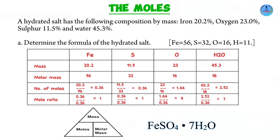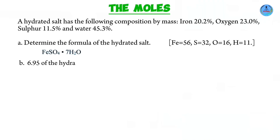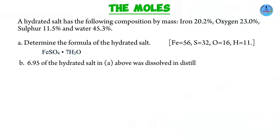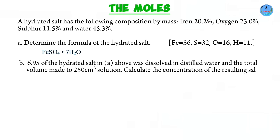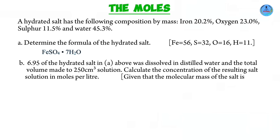Now for the second part. 6.95 grams of the hydrated salt whose formula we just determined was dissolved in distilled water, and the total volume made up to 250 cubic centimeters of solution. Calculate the concentration of the resulting salt solution in moles per liter, given that the molecular mass of the salt is 278. Concentration in moles per liter is essentially asking for the molarity, so we need to determine the molarity.